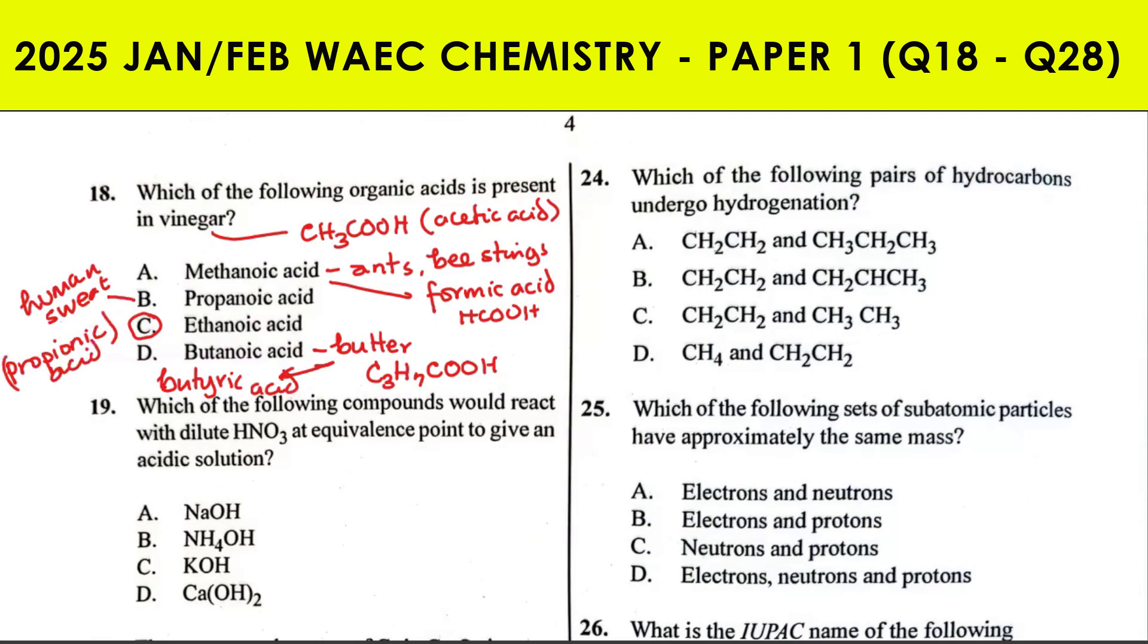Question 19: which of the following compounds would react with dilute HNO₃ at equivalence point to give an acidic solution? This dilute HNO₃ is a strong acid. If it must react with a substance that would end up producing an acidic solution at equivalence point, it means that substance must be a weak base.